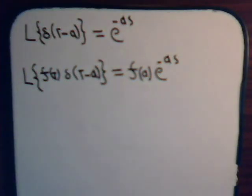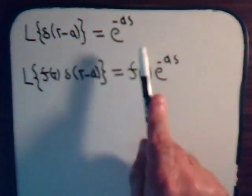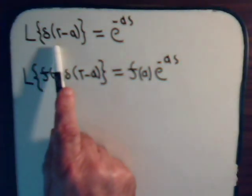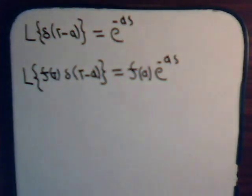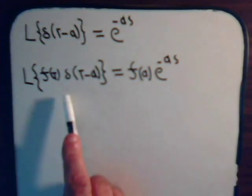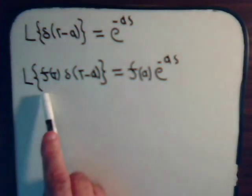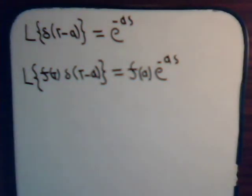In the last video, we derived these relations concerning the different forms for the Laplace transform of the Dirac delta function. If it's just delta(t-a), then it's a simple expression. If it's the Laplace transform of just delta(t) where a is 0, then we have e to the 0, that's just 1. If we multiply some function by the Dirac delta function and take the Laplace transform, we derived that equation. In this video, we want to work through some examples using these formulas.